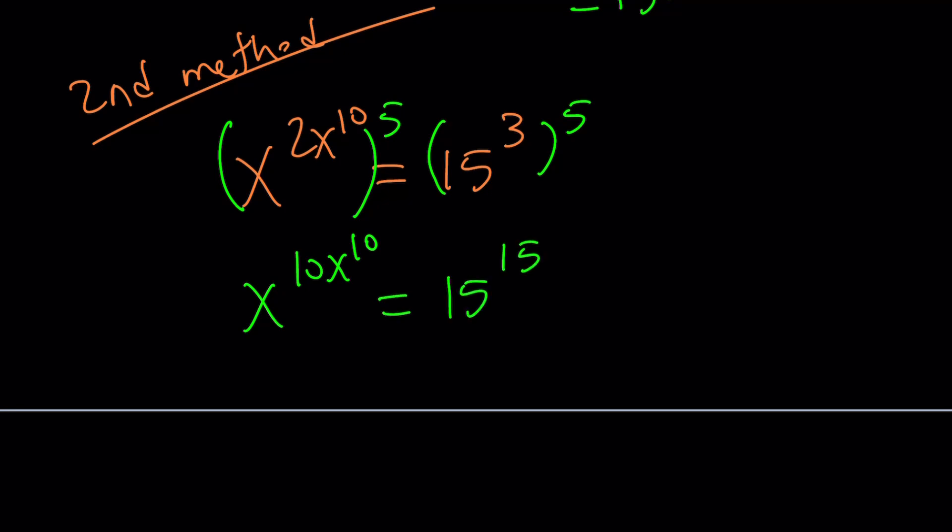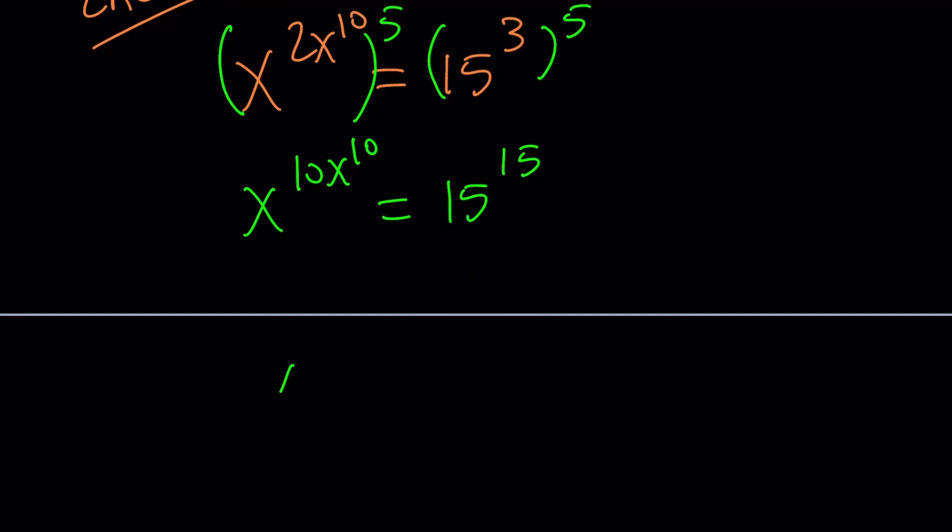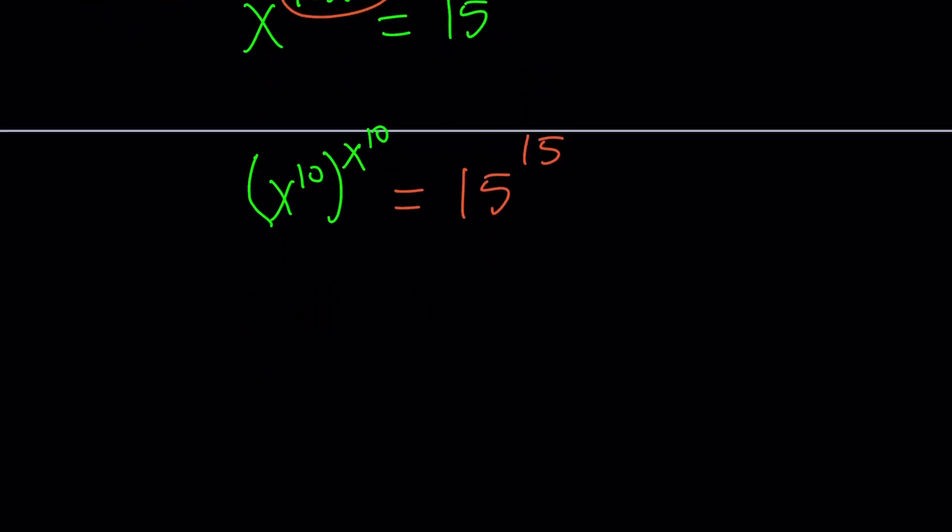Now I get x^10x^10 equals 15 to the power 15. Now look at the left-hand side. Can't we write this as (x^10)^(x^10)? Because the exponents here are being multiplied. This gives us what we want. We have something like base to the base equals 15^15. From one-to-one correspondence, you can basically say that x^10 is supposed to be 15. So from here, x becomes 15 to the power 1 tenth or the tenth root of 15.